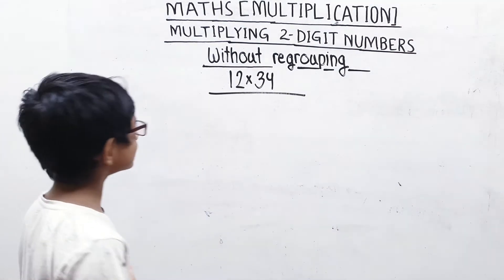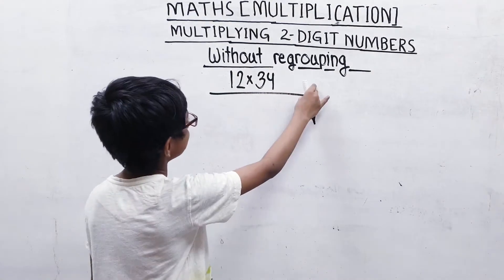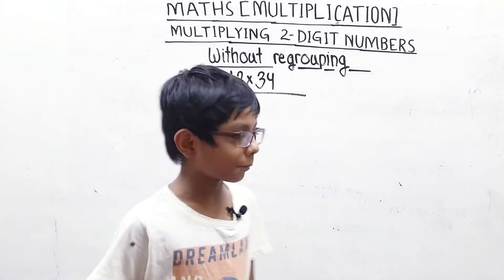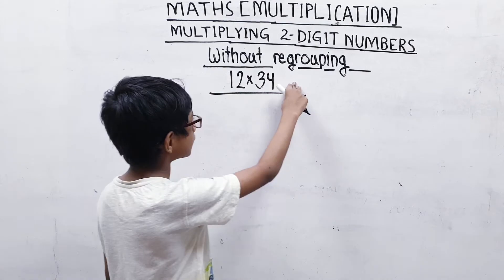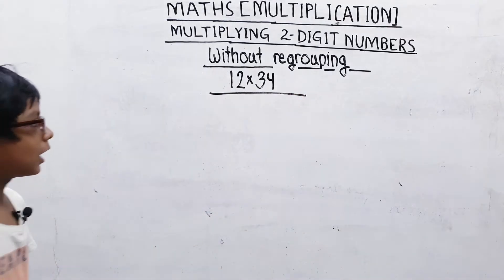Multiplying two-digit numbers without regrouping. For example, 12 multiply by 34.